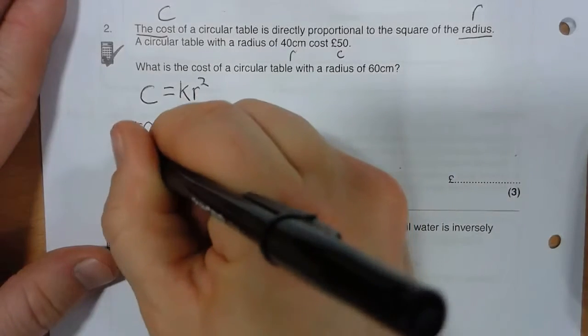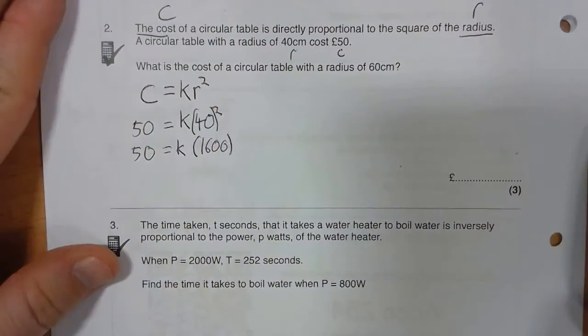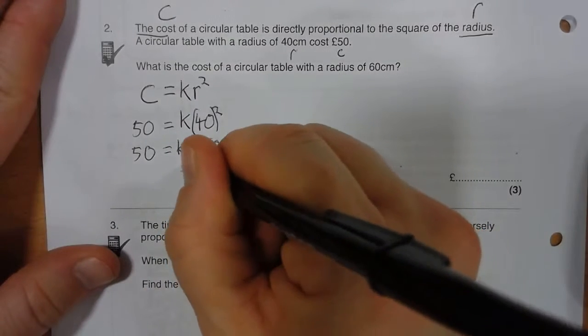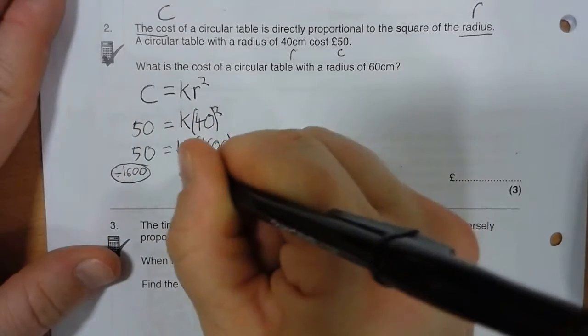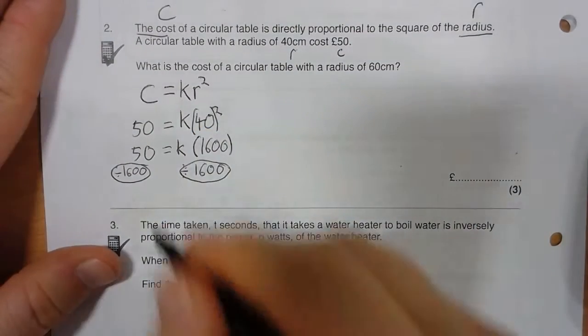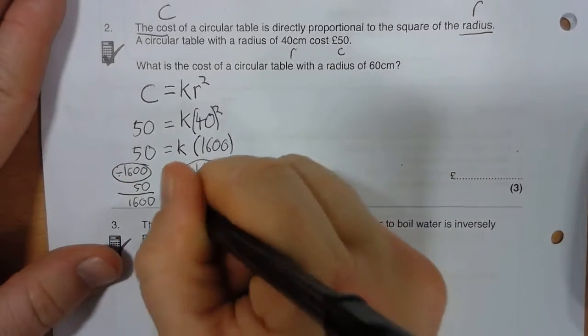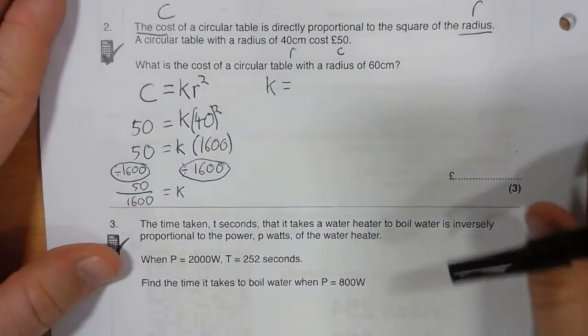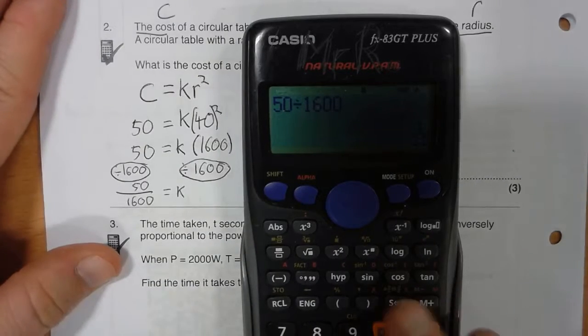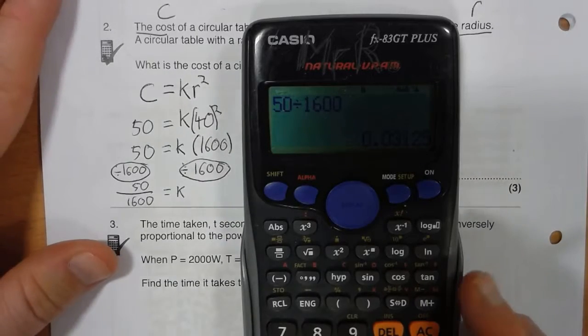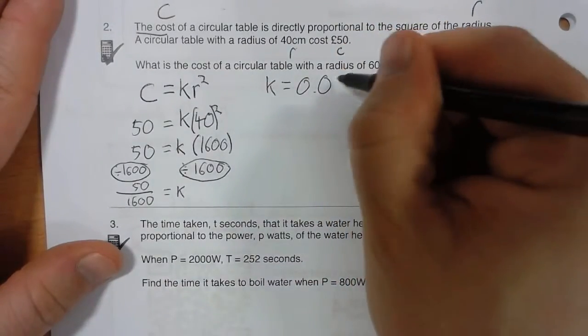So I've got 40 squared equals 1,600. So I've got 50 equals K times 1,600. So if I divide both sides by 1,600, that gives me K equals 50 over 1,600. So K is equal to 50 divided by 1,600, 1/32, or 0.03125.